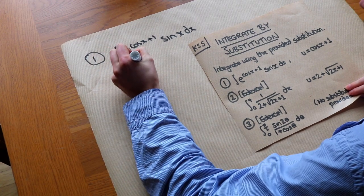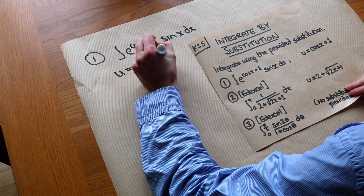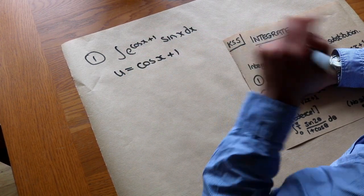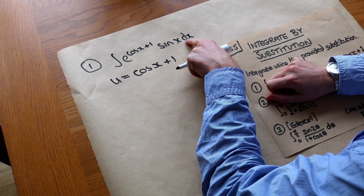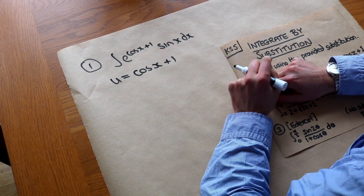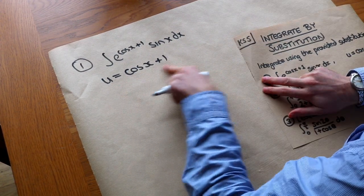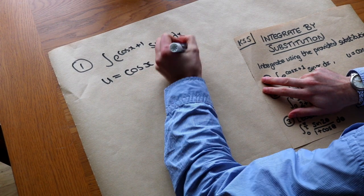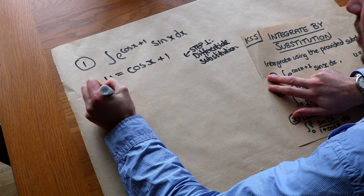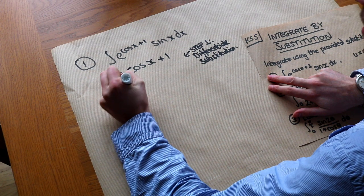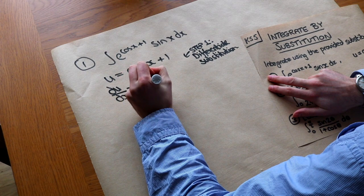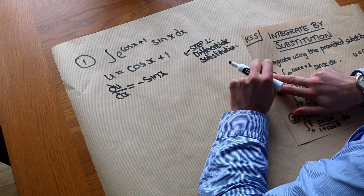We've got here u is equal to cos of x plus 1. We need to get the whole thing in terms of u, so we need to replace dx with du and convert all the x's into u's. Step 1 is always to differentiate the substitution. The left-hand side becomes du over dx, and differentiating the right-hand side gives minus sin x — the plus 1 disappears.